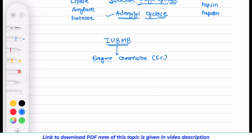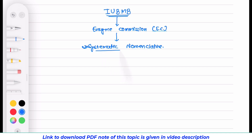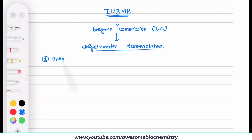This Enzyme Commission proposed a systematic nomenclature to remove the ambiguity arising from the large number of enzymes. This systematic nomenclature has been divided into two parts: the first part is the unique numeric code, and the second part is the systematic name.